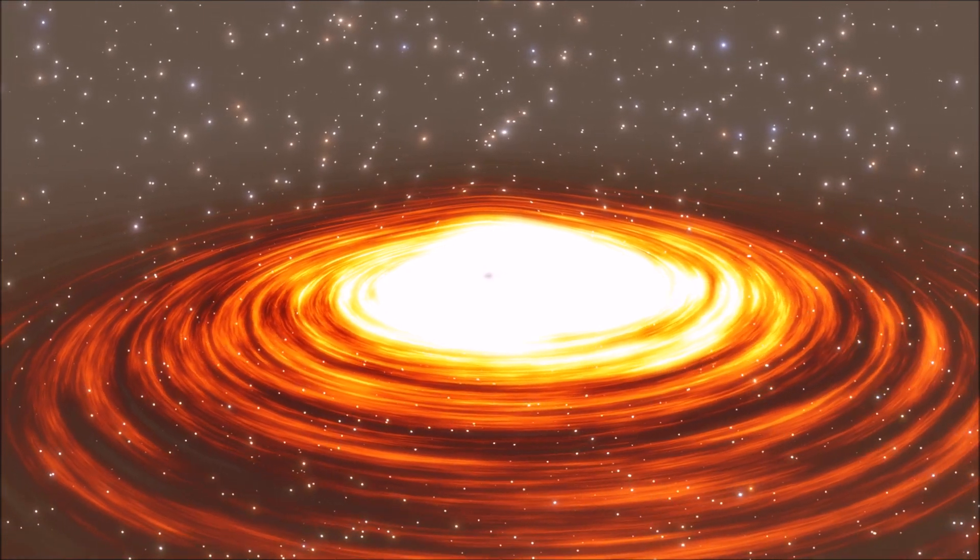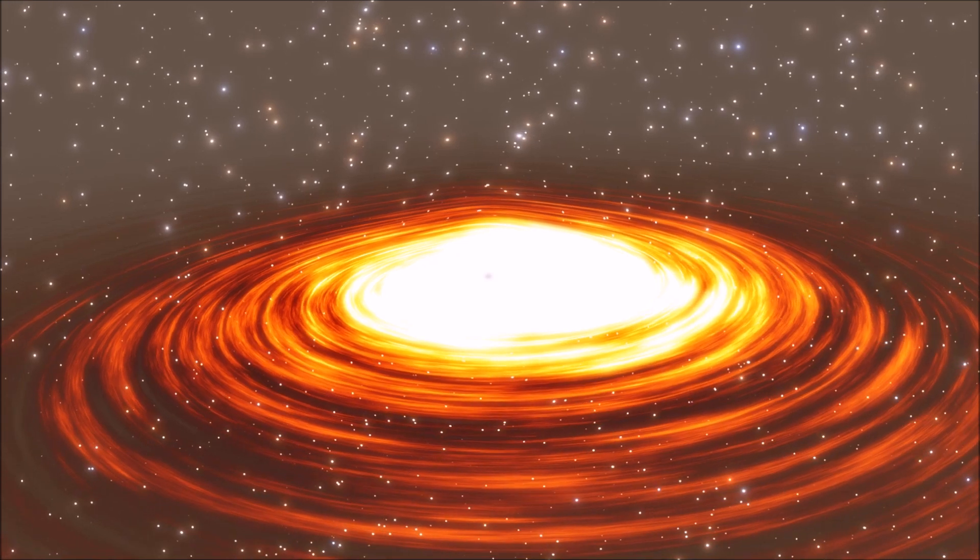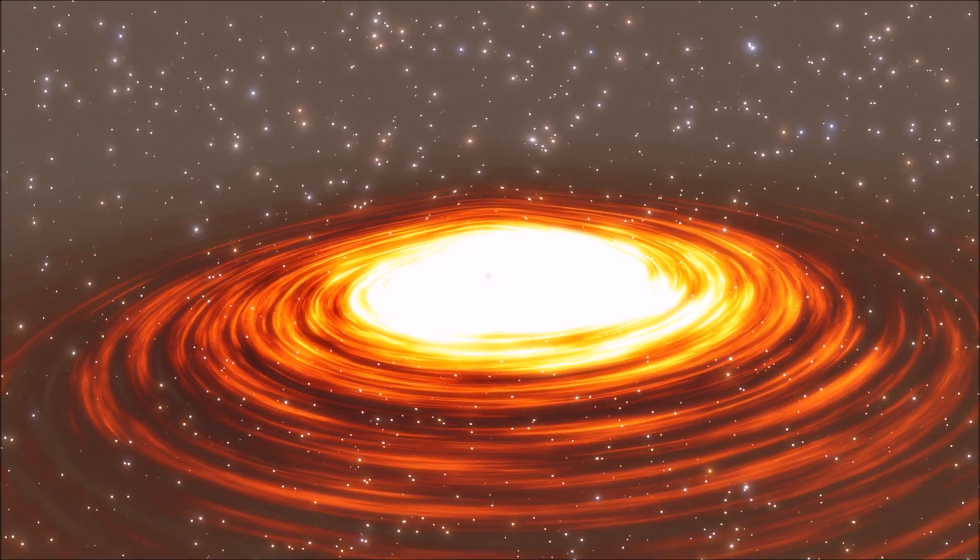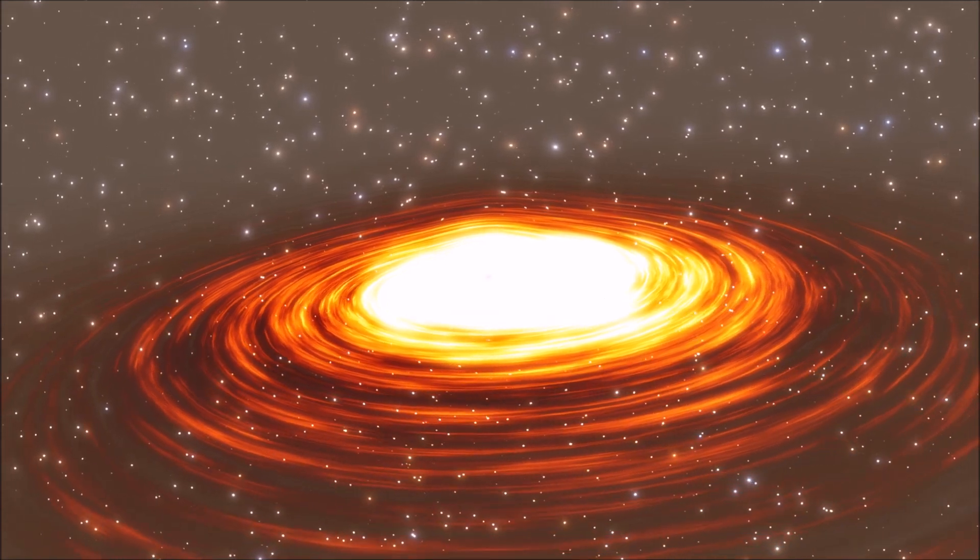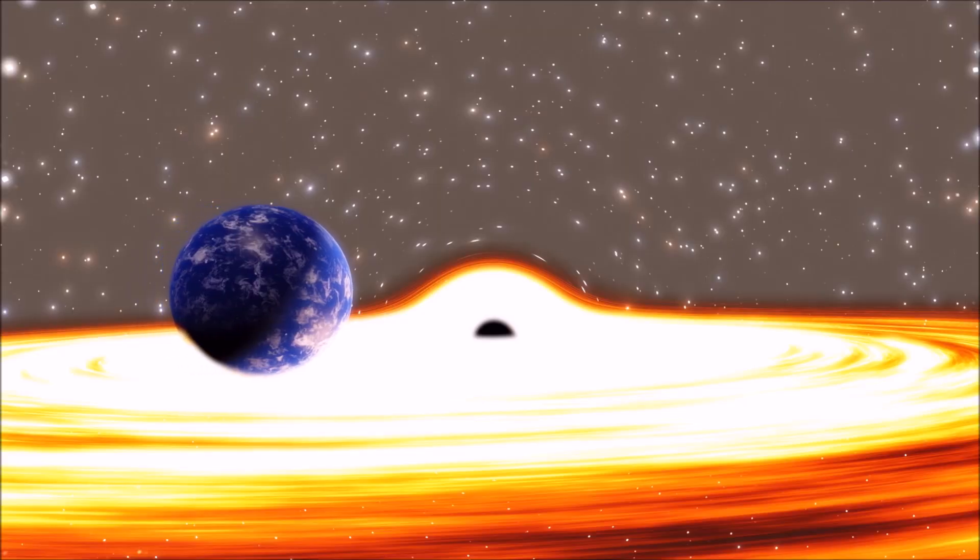If it has an accretion disk orbiting around it, it is likely that the disk is light years in diameter, containing stars within and around it. This disk would take up the entire sky on any planets located near it.